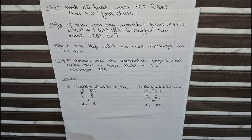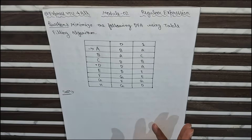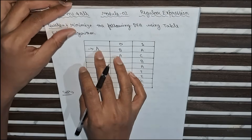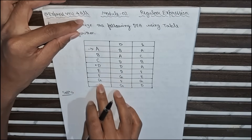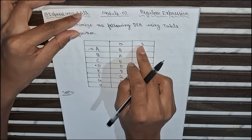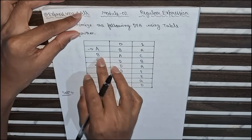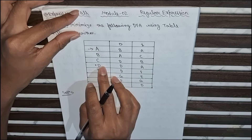Now let us move to our question. The states are a, b, c, d, e, f, g, h, and the input symbols are 0 and 1. Here a is the initial state and d is the final state.